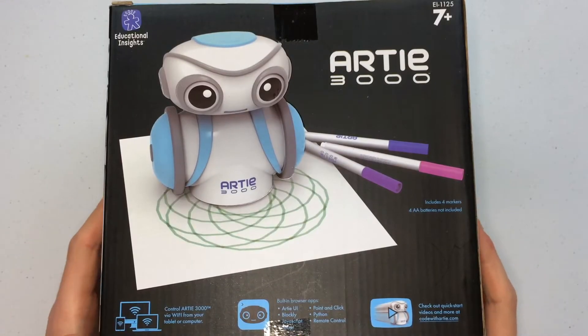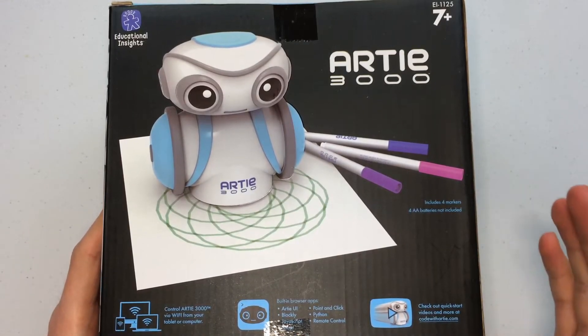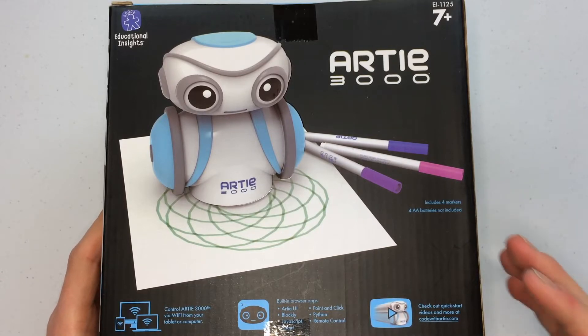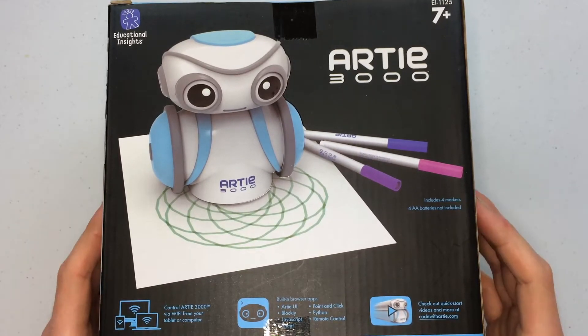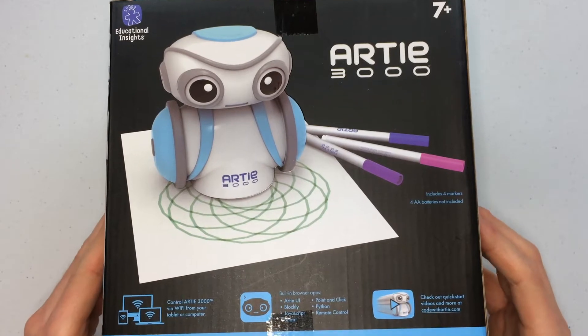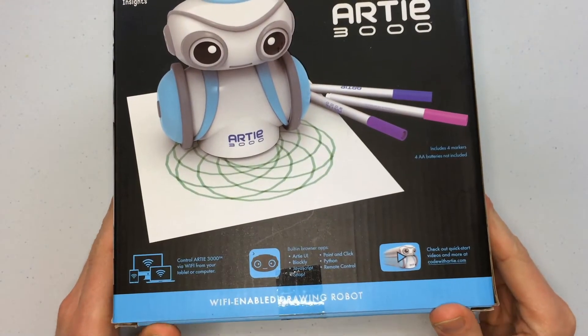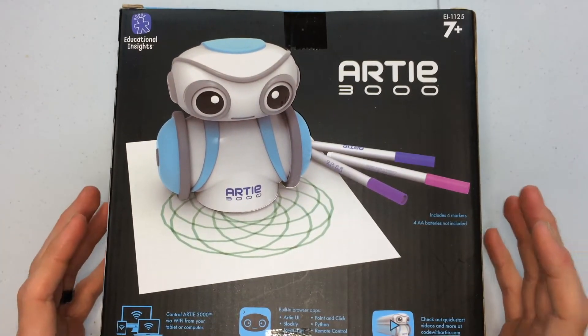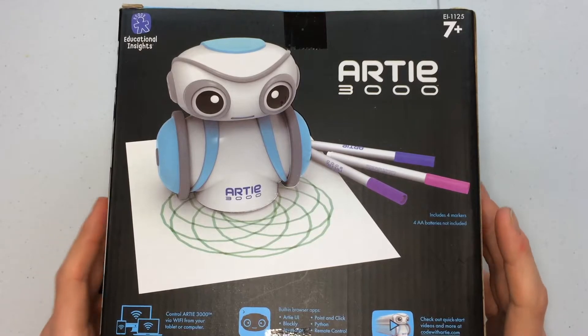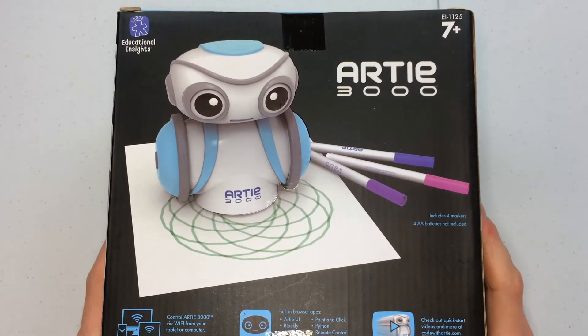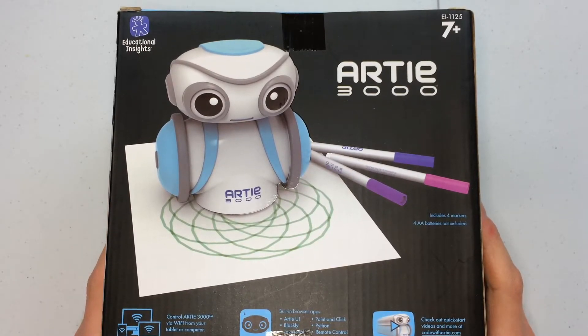Hey guys, welcome back to another episode of Builds Back to Life. Today we're going to be trying to troubleshoot and potentially repair or fix this Artie 3000 Wi-Fi enabled drawing robot. In Christmas of 2019, one of my family members gave this to my little brother. I guess it just ended up not working, they said.